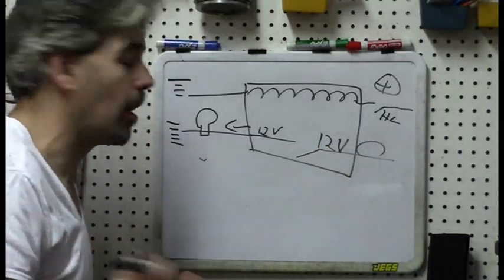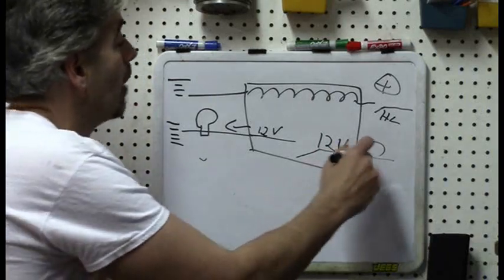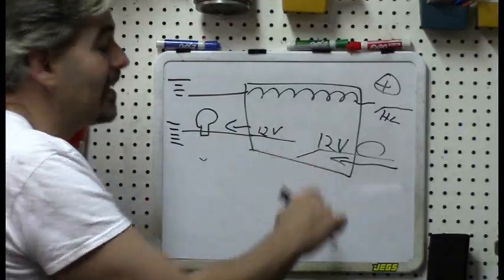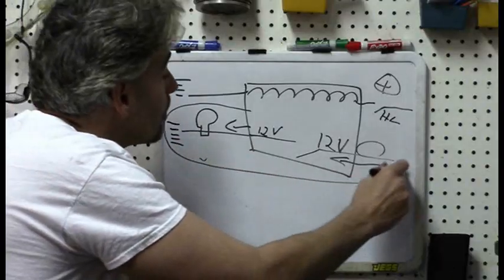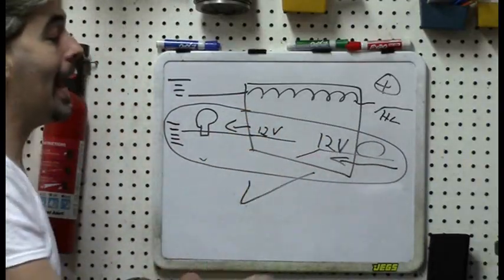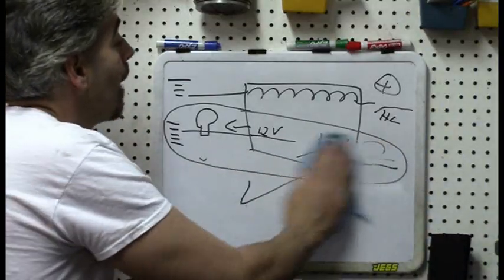We also know that this switch here is operating okay because I measured 12 volts at this end. I don't know if I showed that actually on this car, but of course I did it when I was doing the actual diagnosis on the real car. So I know I've got 12 volts to the switch. I know I can test the relay and the relay works.